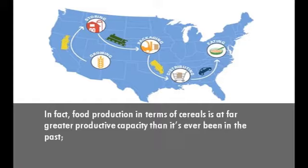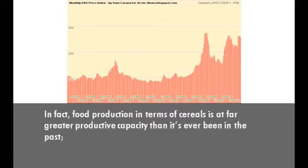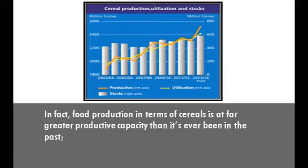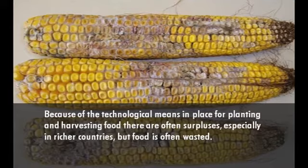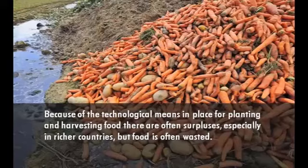In fact, food production in terms of cereals is at far greater productive capacity than it has ever been in the past (see also FAO cereal supply and demand brief). There is more than enough food to go around, even as the global population gets bigger and more people demand a varied diet, as many people living in more developed countries do. Because of the technological means in place for planting and harvesting food, there are often surpluses, especially in richer countries, but food is often wasted.